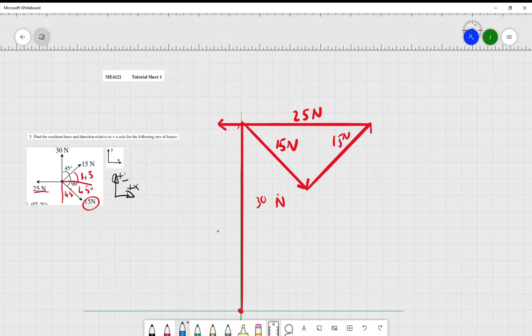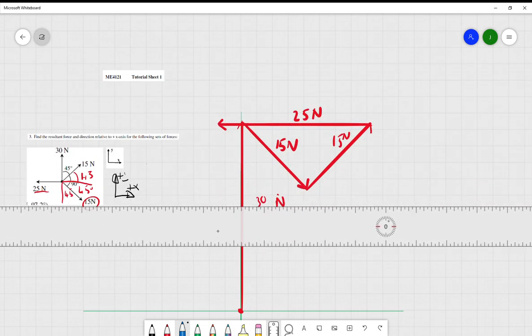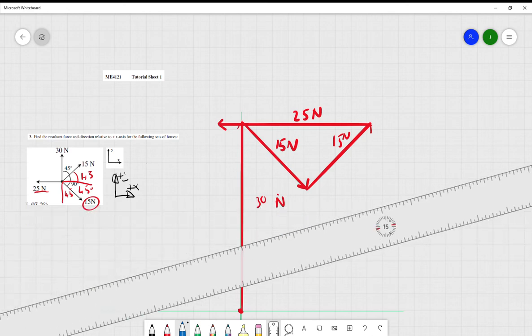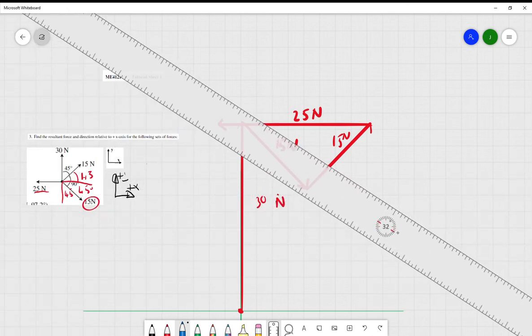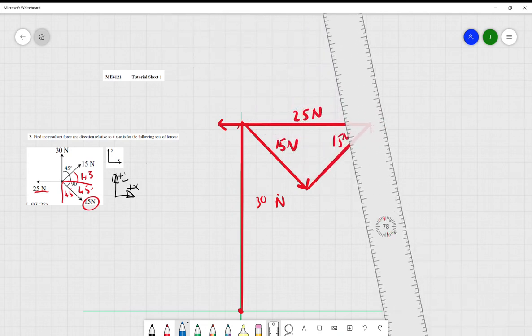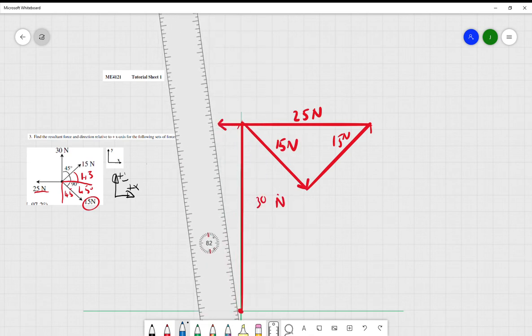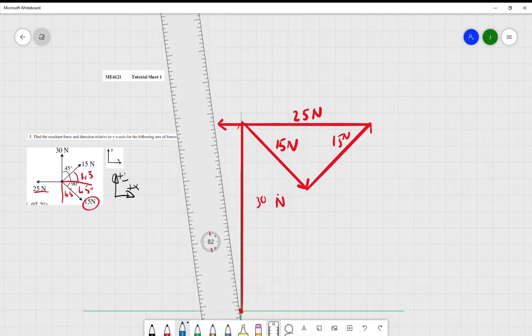I'll make this blue so I don't confuse the direction. This is where you're going to use your protractor, and I'm just going to use this ruler to try and get a rough estimate of what the angle is going to be. It's going to be around 82, I believe.